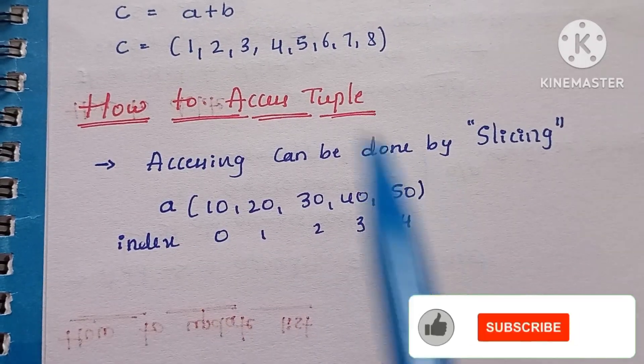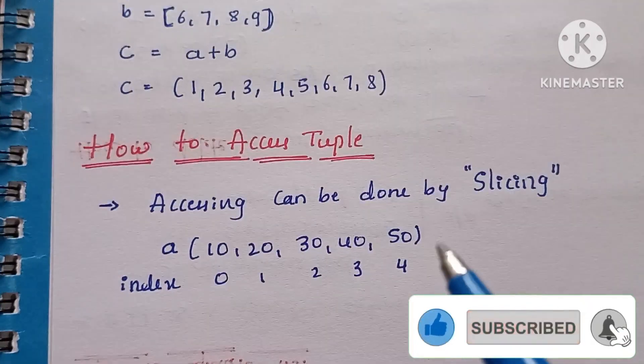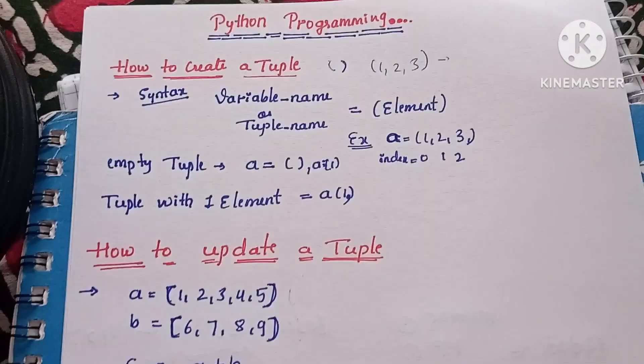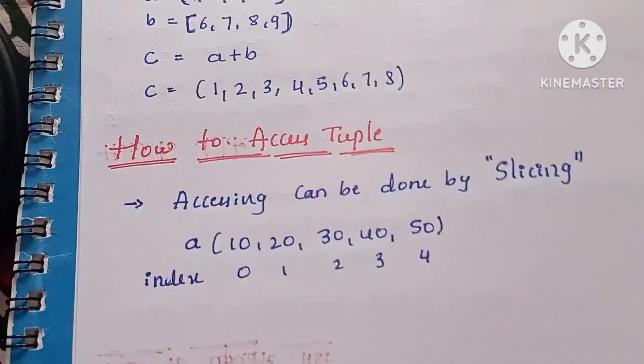This index value is 0, 1, 2, 3, 4. So this is how we can access the tuple. So these are the methods in Python. I hope these concepts are clear.